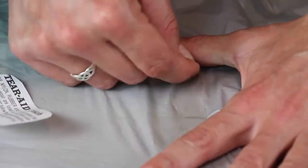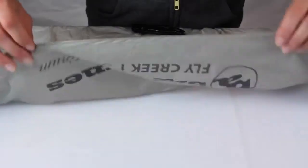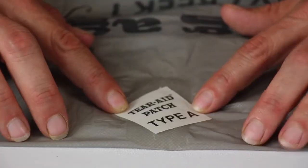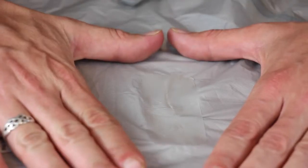Rub patch aggressively to ensure all edges are sealed. Follow these steps on the back side of the repair if you have enough tear aid to patch it. Repair is complete.